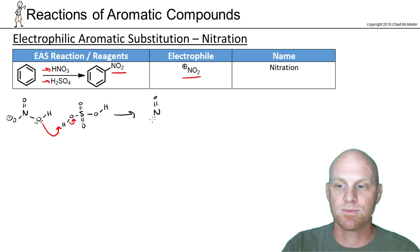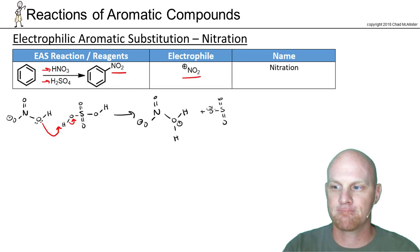So if we look at the species we have now, we've got a great leaving group there. We've also got some hydrogen sulfate here. And now that we've got a good leaving group, we're going to have it leave.